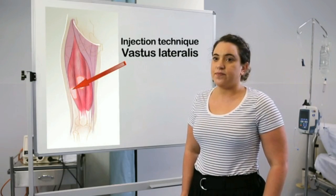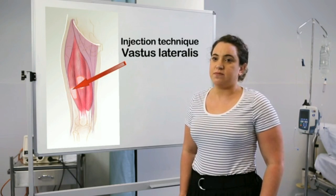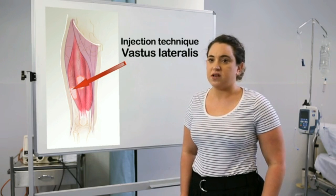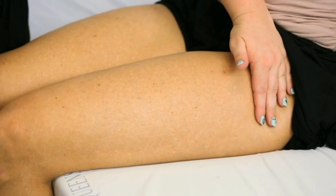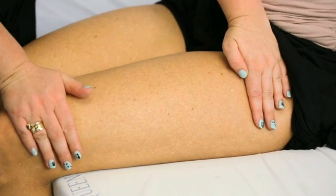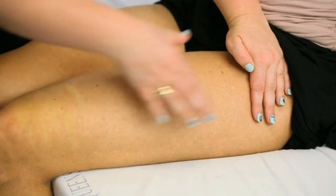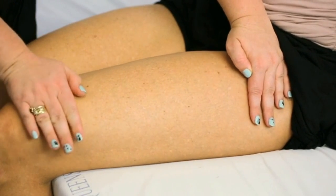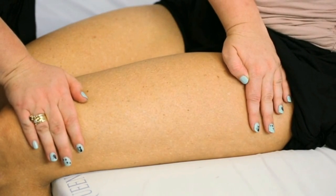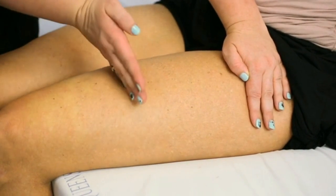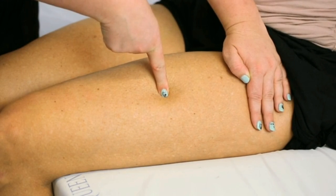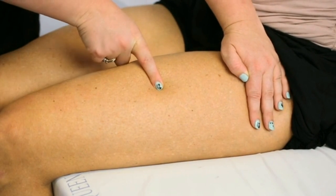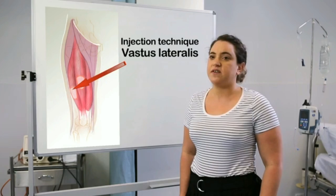Vastus lateralis — anterolateral thigh injection method: Place the patient in a supine, on-back, or sitting position. Place one hand on the patient's thigh against the greater trochanter and the other hand against the lateral femoral condyle near the knee. Visualise a rectangle between the hands across the anterior lateral thigh, where the long sides are formed by an imaginary line down the centre of the anterior thigh and another along the side of the leg. The correct injection site is the middle third of the anterior lateral thigh.